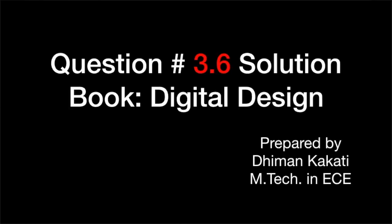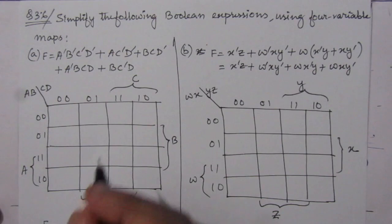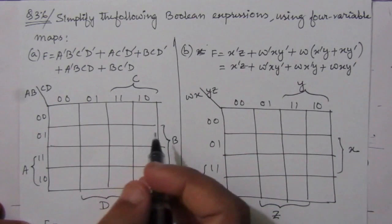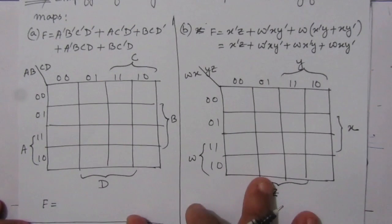Dear students, I welcome you all to this problem solution series in digital electronics. I am solving problems from the book Digital Design by Maurice Mano and Michael C. Ciletti. In this video, I am solving problem number 3.6 from chapter three: simplify the following Boolean expressions — given four Boolean expressions A, B, C, and D — using four-variable Karnaugh maps.